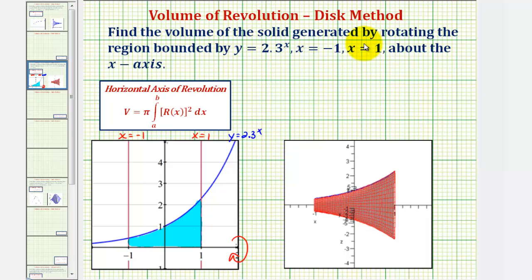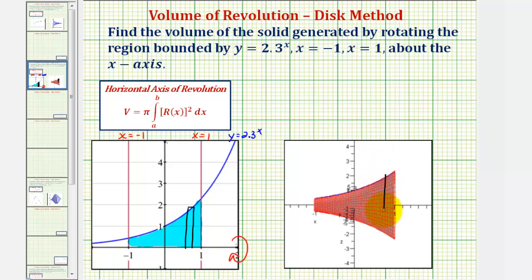When using the disk method or the washer method, it's helpful to sketch a representative rectangle, where if we were to rotate the rectangle about the x-axis, it would give us one disk that would give us an approximate volume for one slice of the solid. As an example, if we were to use this rectangle here and rotate it about the x-axis, it would give us this disk, which would give us the approximate volume of one slice of our solid.